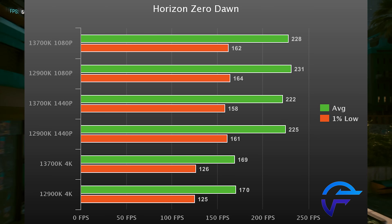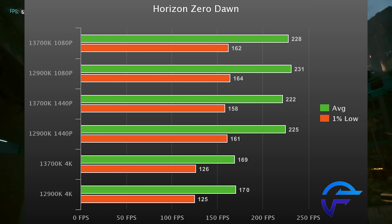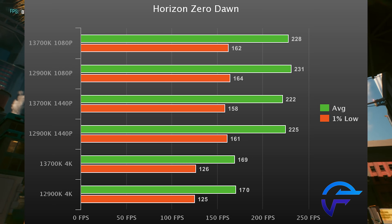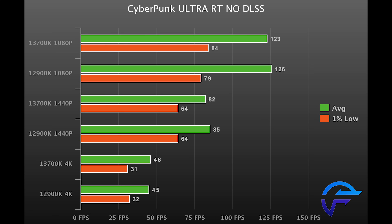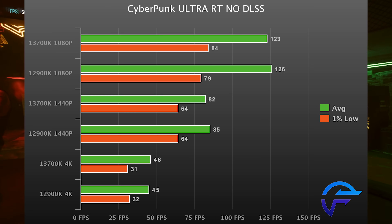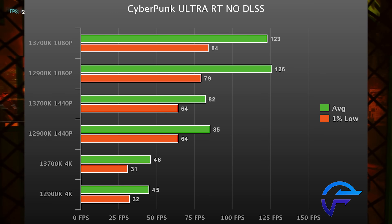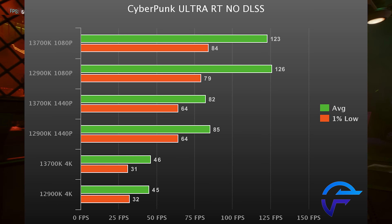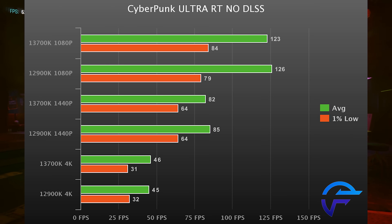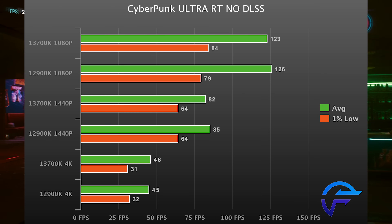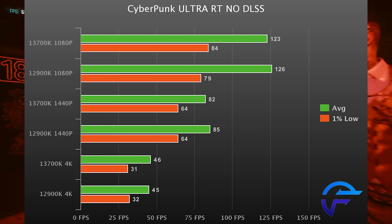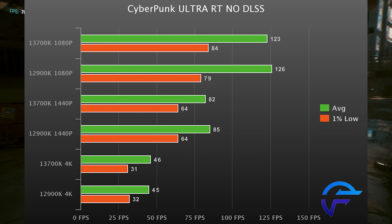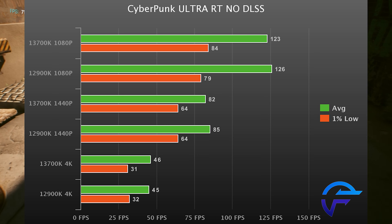Moving straight on to Horizon Zero Dawn — the results are exactly the same once again, all within 1–2 FPS variance, zero difference between these CPUs. Two for two. Cyberpunk is up next. The 13700K did seem to perform a few percent better in the lows at 1080p, but that could just be run-to-run variance since we're talking about 5 FPS. The only thing I can think of is maybe that extra L2 cache gives a few FPS bump in this game specifically, but for argument's sake we're going to call it functionally the exact same and move on.